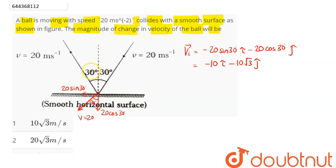Now, coming to final velocity vector, we can say this component here is 20 cos 30, and the x component here is 20 sin 30.